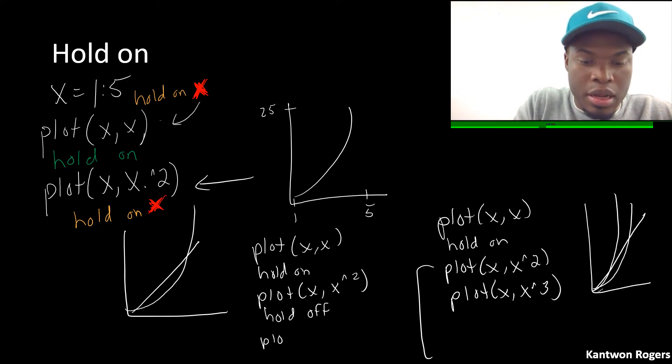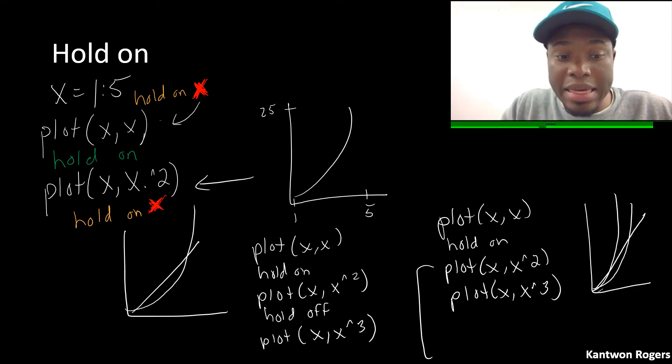And then plot x,x cubed. In this case here I plotted my first one so I have x there. Then I call hold on so now when I plot my x squared it goes on to the same graph. Then when I call hold off it's telling MATLAB everything after that just go ahead and overwrite it. So when I call this third plot it overwrites all of my other plots and so therefore my plot at the end of all this will just be a plot of x cubed.